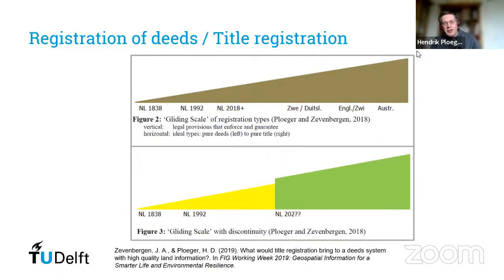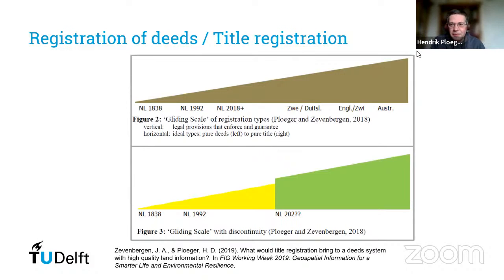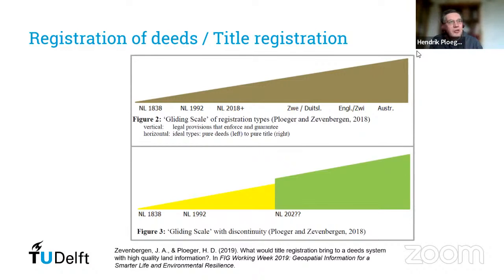According to our model there is not a smooth gliding scale but a step in between. The question is: does making that step — leaving the system of registration of deeds behind and moving to title registration — is that worthwhile? It's not an easy decision. Also, suppose that in 2023 the Netherlands introduces title registration — we would see the same as in England and Wales: not from day one to day two does everything suddenly change to title registration. Rather, at the moment you transfer land, it moves from the old system to the new title registration.